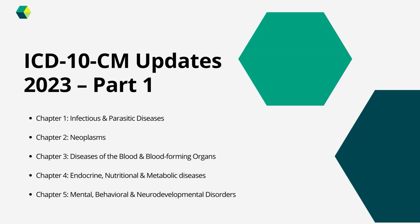This is the first part of the updates series and we will cover the first five chapters from ICD-10-CM. Majority of the updates are from these first five chapters: infectious and parasitic diseases, neoplasms, diseases of the blood and blood forming organs, endocrine, nutritional and metabolic diseases, and the mental, behavioral and neurodevelopmental disorders. These are the five chapters where majority of the updates are focused on for this year.